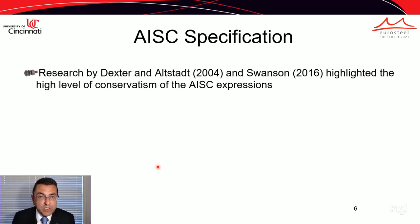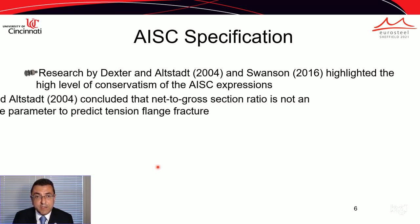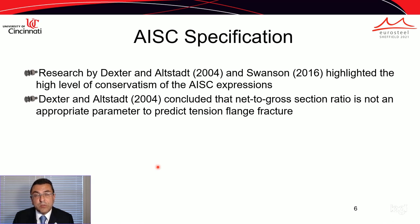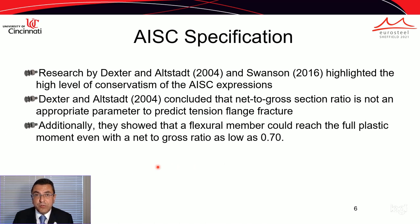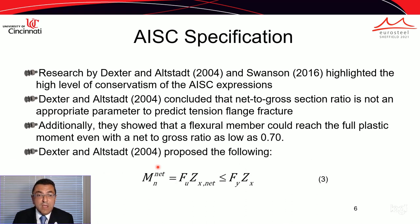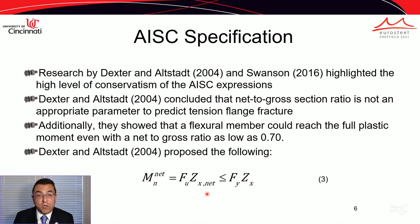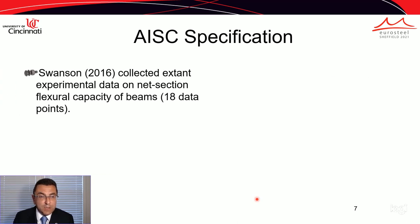Dexter and Alstad in 2004, followed by Swanson in 2016, highlighted the high level of conservatism of the AISC expressions. In particular, Dexter and Alstad concluded that the net-to-gross section ratio is not a good parameter to predict tensile flange fracture, and showed that flexural members could reach the full plastic moment even with a net-to-gross ratio as low as 0.70. They proposed an expression evaluating net flexural capacity as the ultimate strength multiplied by the net section plastic modulus, capped by the plastic moment using the gross section plastic modulus.